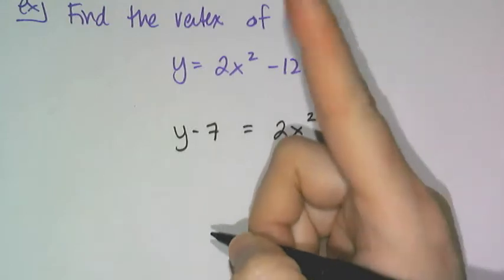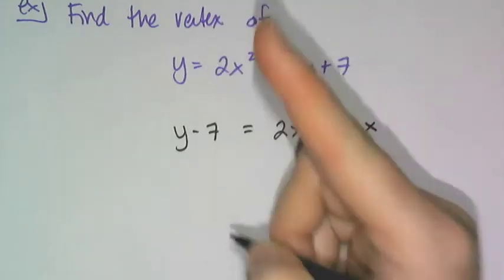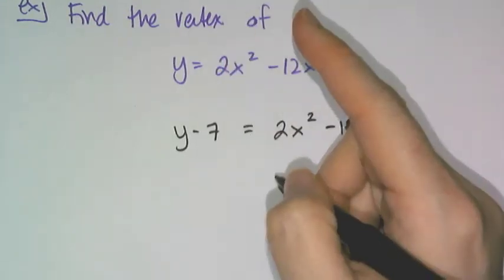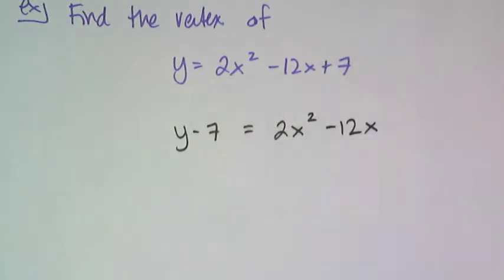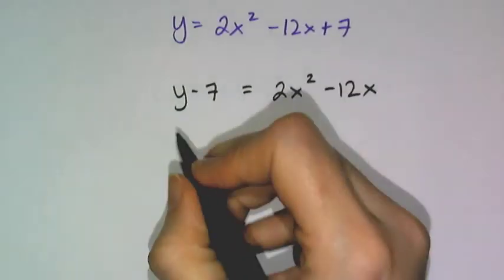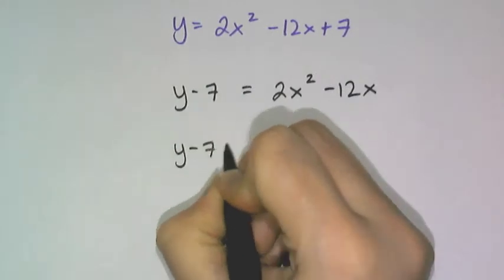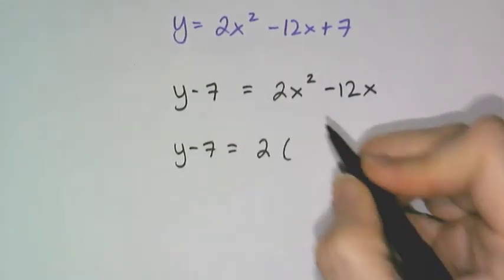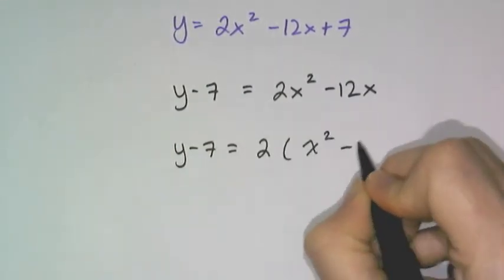Now I'm going to do something a little bit differently. I am NOT going to divide by 2 because I need to make it look like vertex form. What I'm going to do instead is factor out a 2. So I get y minus 7 equals 2 times x squared minus 6x.